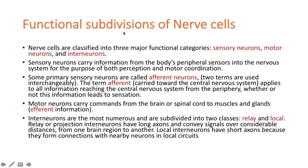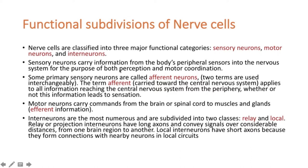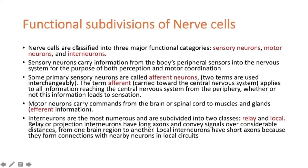When we try to subdivide neurons in terms of nerve cells, there are actually three major functional categories: the sensory neurons, the motor neurons, and the interneurons. Sensory neurons actually carry information from the body's peripheral sensors into the nervous system for the purpose of perception, motor coordination, etc. As you can see on the slide, these are the things from which sensory neurons are bringing sensory feedback and putting those signals into the central nervous system. That is the sensory neuron.